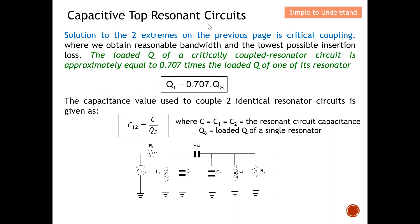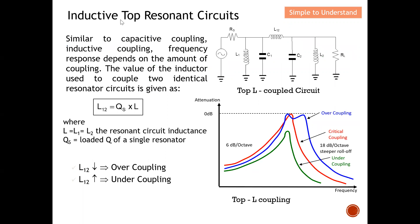Next I'll discuss the inductive top coupled resonator circuit. This is quite similar to capacitive coupling. For inductive coupling, the frequency response also depends on the amount of coupling — we again have over-coupling, under-coupling, and the key objective is to achieve critical coupling. The inductor value L12 used to couple two identical resonant circuits is given by: L12 = L / Q, where Q is the Q-factor of a single resonator and L is the inductance of L1 or L2, which are typically symmetric and equal.